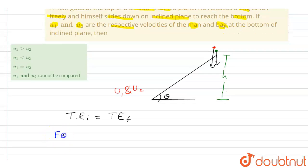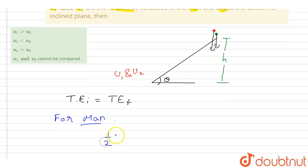So if I write this for man, half, let's say the mass of the man is m1, into initial velocity at the top will be zero, plus potential energy will be m1 g h. This will be equal to